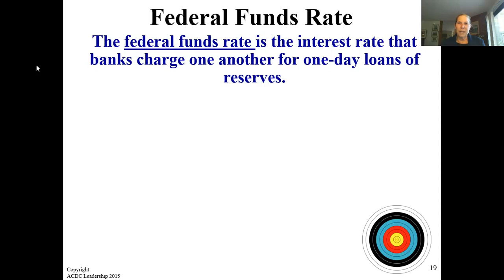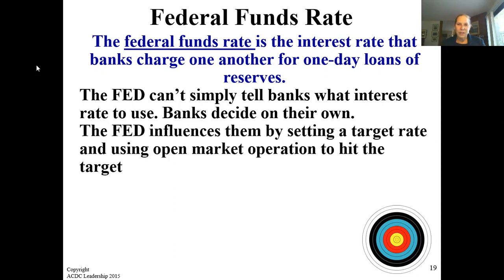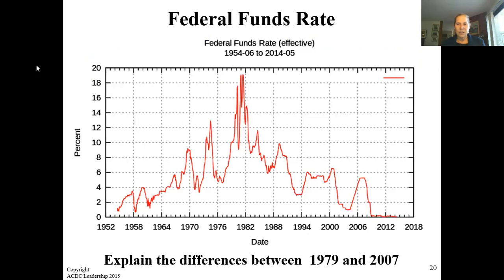The federal funds rate is an interest rate that banks charge one another for one-day loans of reserves. The Fed can't simply tell banks what interest rate to use — banks decide on their own. The Fed influences them by setting a target rate and using open market operations to hit that target. The federal funds rate fluctuates due to market conditions but is heavily influenced by monetary policy — the buying and selling of bonds. Here's a chart of the federal funds rate from 1954 to 2014. Note the difference between 1979, when it peaked very high, and 2007, when it peaked at a much lower percentage rate.